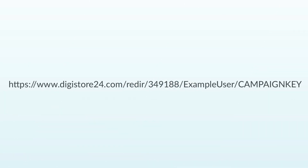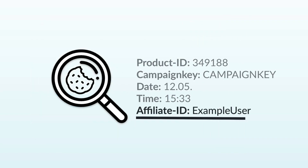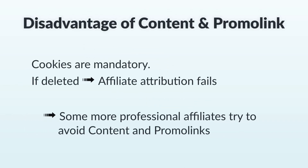Both the promo link and content link work via cookies. If a potential customer clicks on one of these links, a cookie is stored in their browser, which can then be read by Digistore24 during the purchase. This way, it provides information about which affiliate referred the customer and compensates them accordingly. Since this mechanism works via cookies, there's a decisive disadvantage: the cookie can be deleted quite easily and is therefore not so readily used by more professional affiliates.